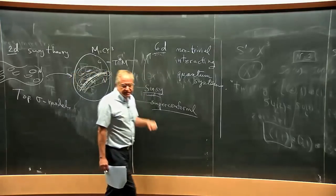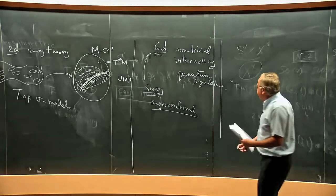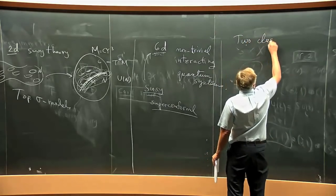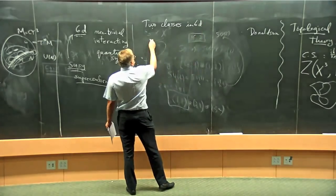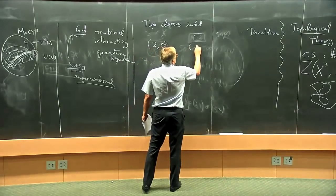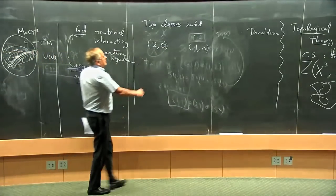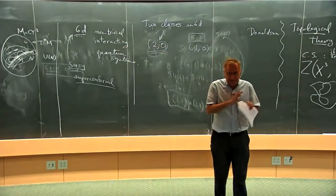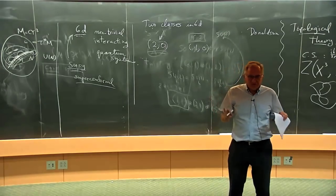There are actually two classes of these 6D theories, depending on the amount of supersymmetry: the one with the bigger supersymmetry called (2,0) supersymmetry, and the one with less supersymmetry called (1,0). This class — (2,0) — is completely classified. We think we know the full list of (2,0) superconformal theories in six dimensions, and these are classified by simply-laced groups A, D, E. Even though we use a group label, this actually has no gauge symmetry in six dimensions — somehow A, D, E labels these theories.